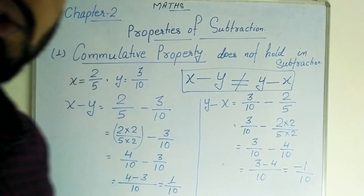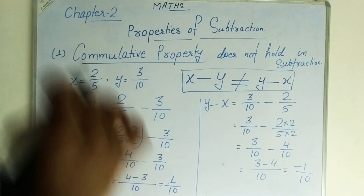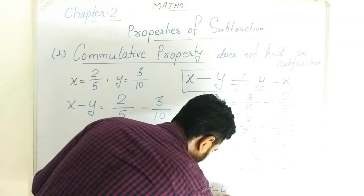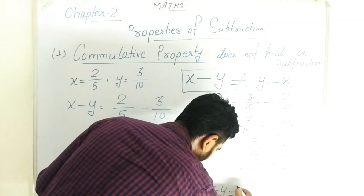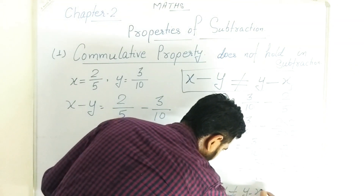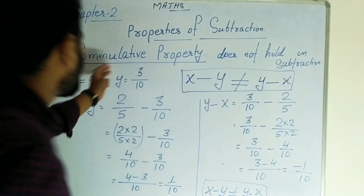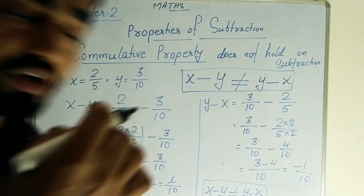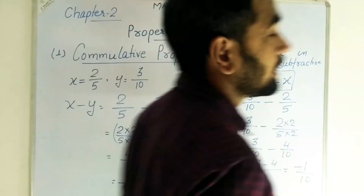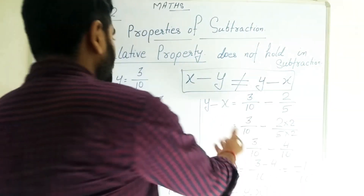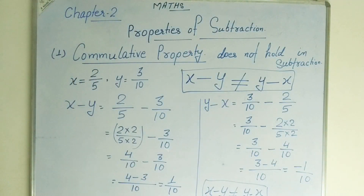Is 1 by 10 equal to minus 1 by 10? It is not possible. So we can say x minus y is not equal to y minus x, which means commutative property does not hold in subtraction. Write this example in your notebook.